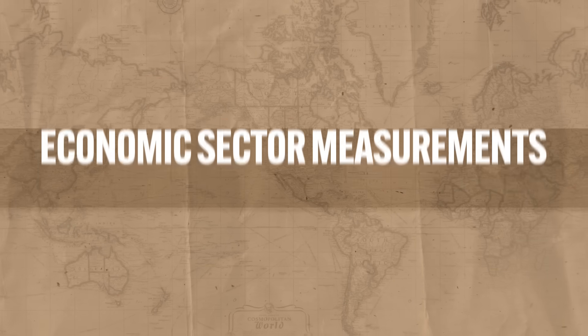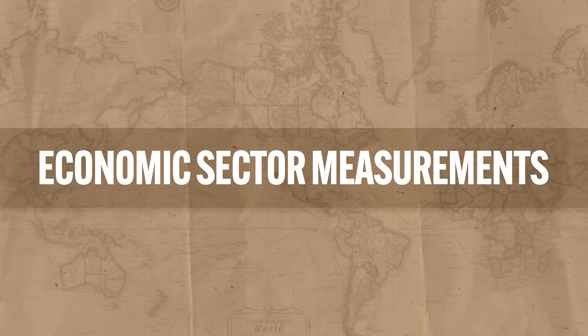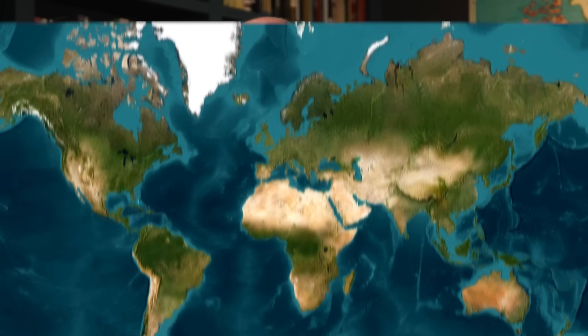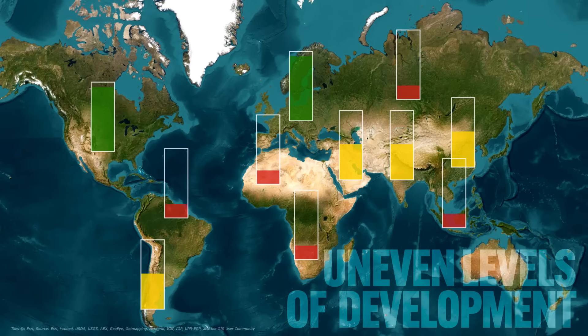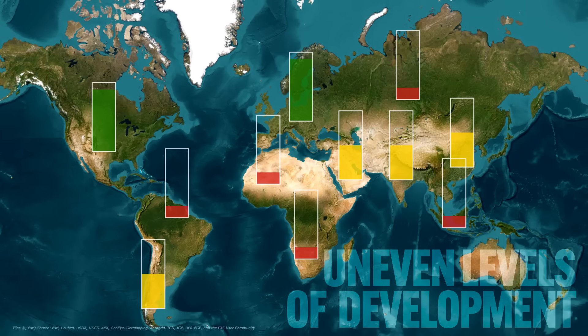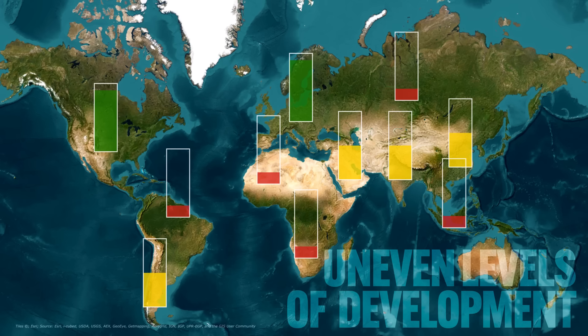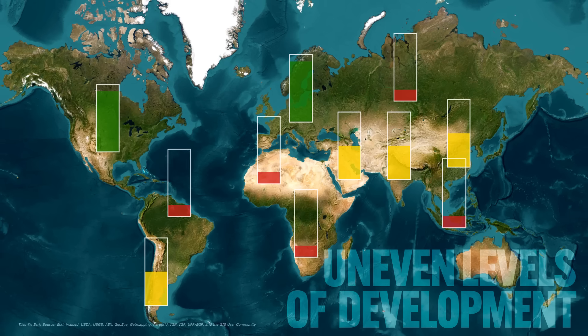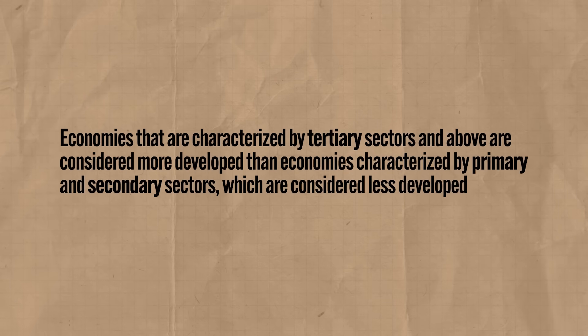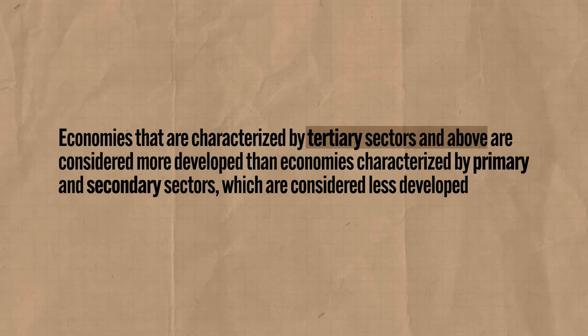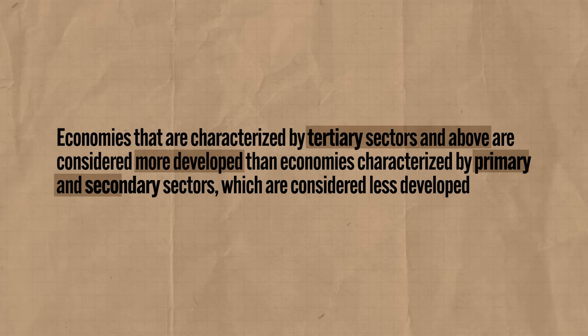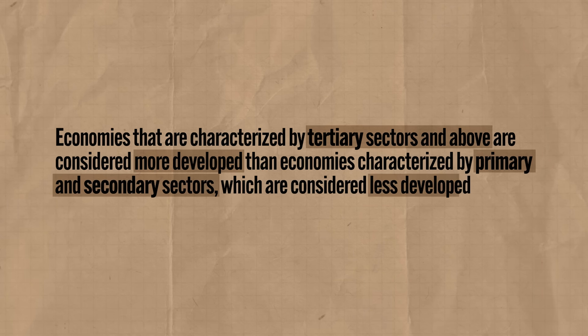Another major indicator of a country's level of development is the structure of its economic sectors. Economies that are characterized by tertiary sectors and above are considered more developed than economies characterized by primary and secondary sectors, which are considered less developed.